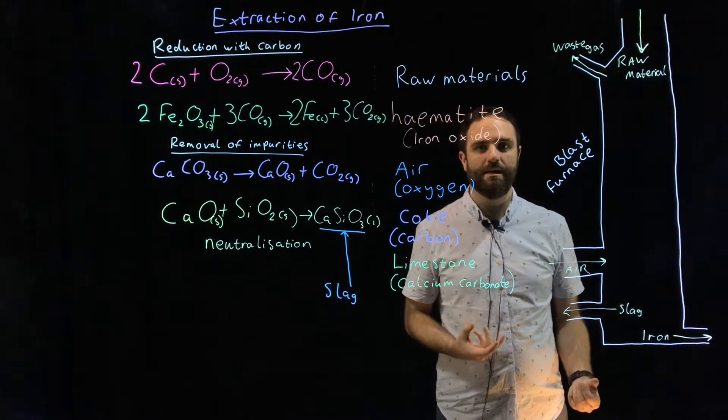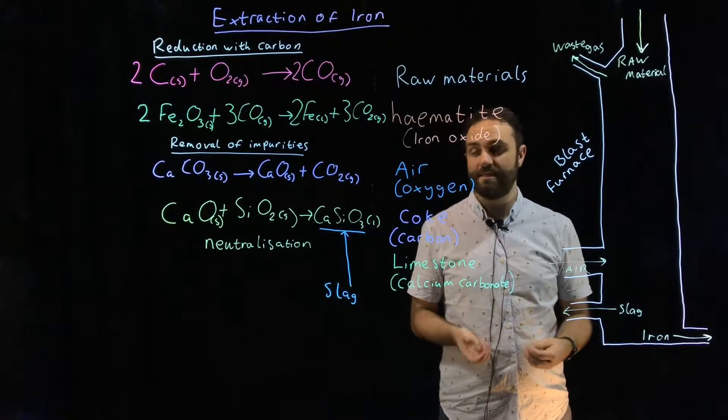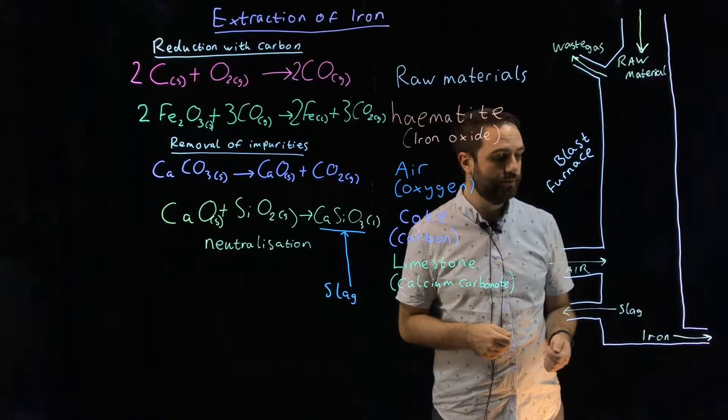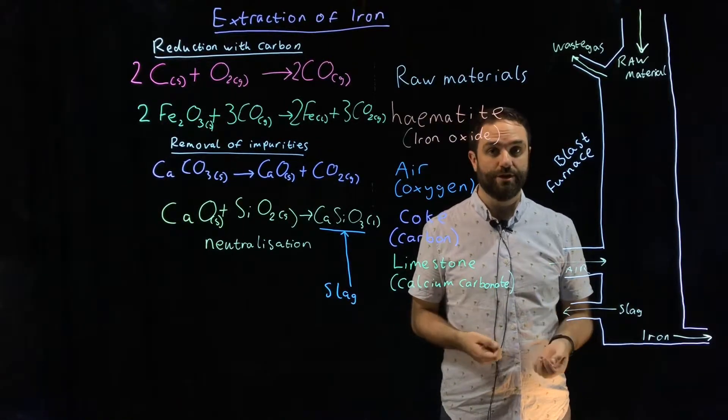Then we've got solid slag. Slag is the name for the removed impurities. It's calcium silicate and we'll talk about how to form that in just a moment. It is used for road building and some other industrial purposes.